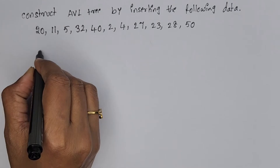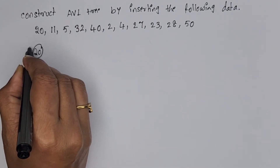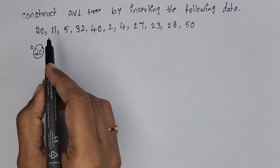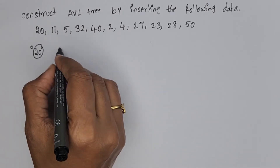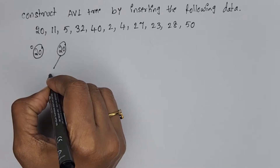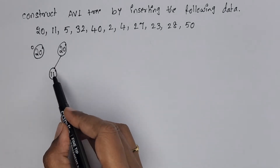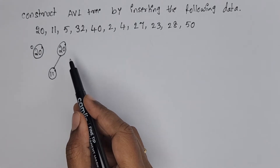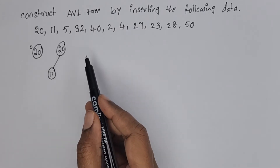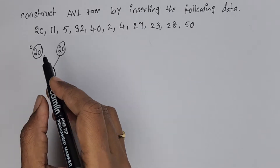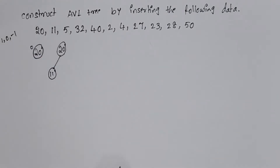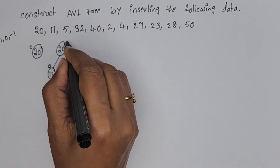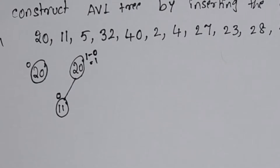The first element is 20. Now 20 becomes the root element. The balance factor of 20 is 0 because there is no left subtree and no right subtree. The next element is 11. Since 11 is less than 20, we insert 11 to the left of 20. After inserting each node, we write balance factors. If the balance factor is between -1 and 1, it is a balanced tree, otherwise it is unbalanced — it must be 1, 0, or -1. The balance factor of 20 is left subtree height 1 minus right subtree height 0, so it is balanced.